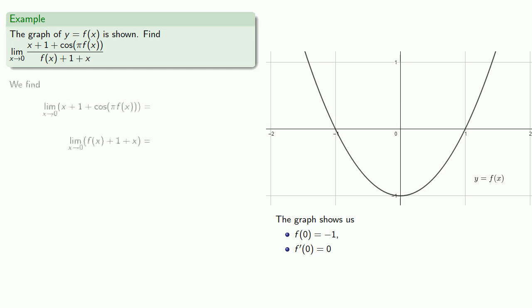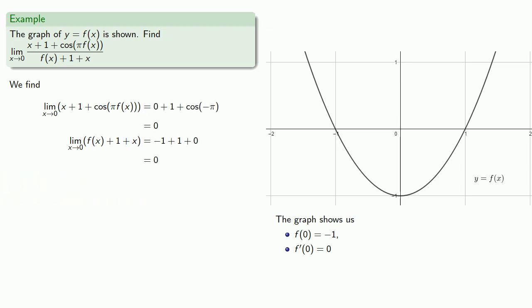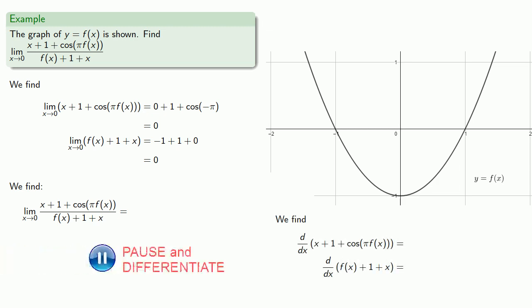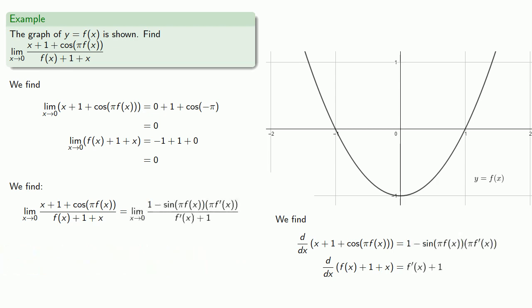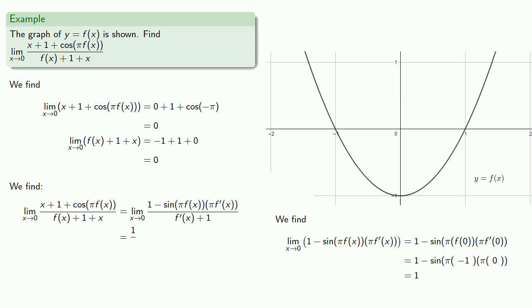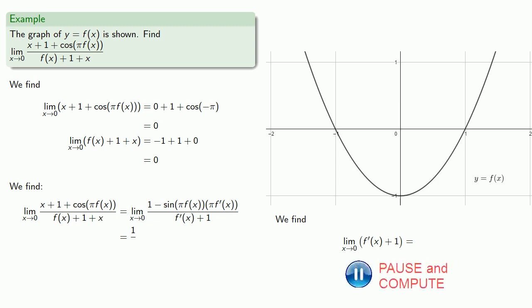This allows us to find the limit of the numerator and the limit of the denominator. Since both limits are 0, we can gain admission to L'Hôpital's. The limit of the quotient of the functions is equal to the limit of the quotient of the derivatives, provided that everything exists. We find our derivatives of numerator and denominator, substitute in the values of f of 0 and f prime of 0. Our numerator goes to 1, our denominator also goes to 1, and so the limit of the quotient is 1 over 1, or 1.